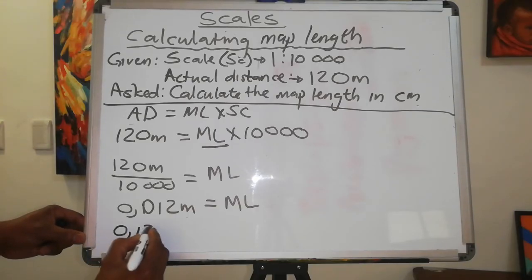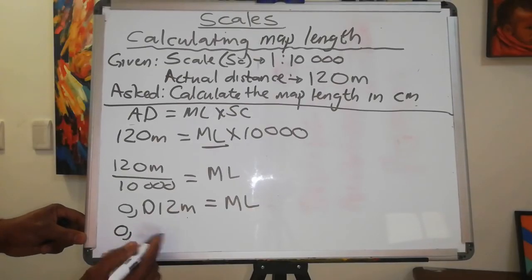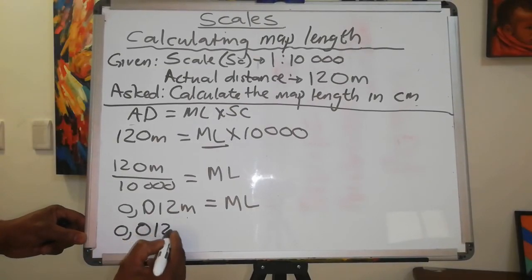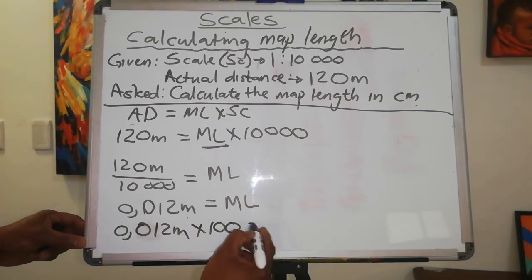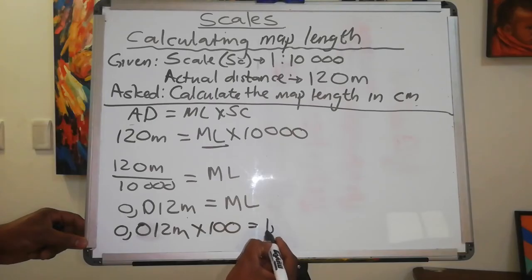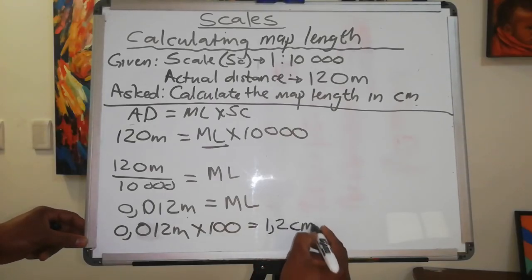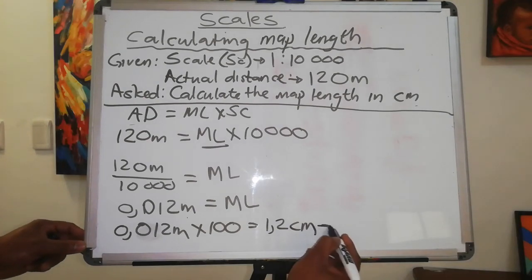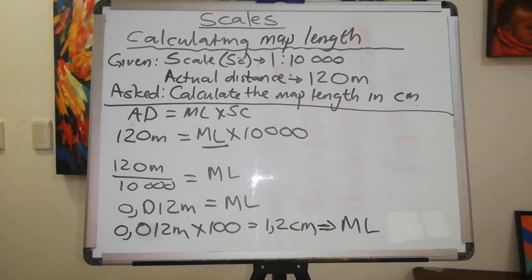We say 0.012 meters multiplied by 100 is equal to 1.2 centimeters, and that is my map length.